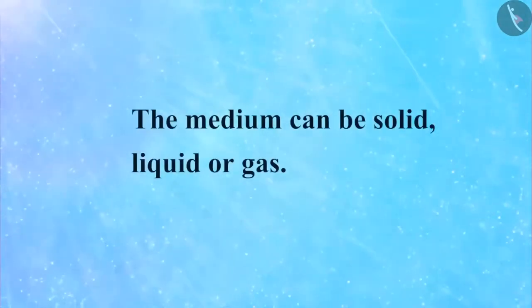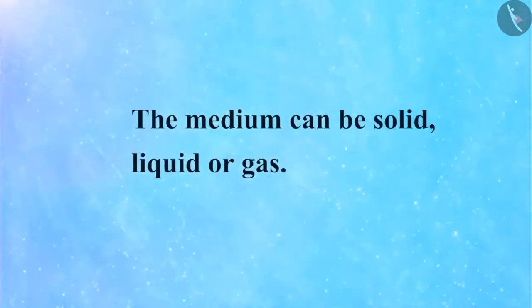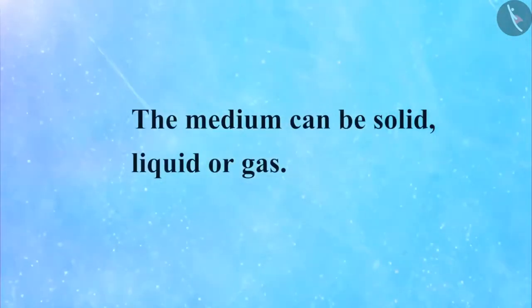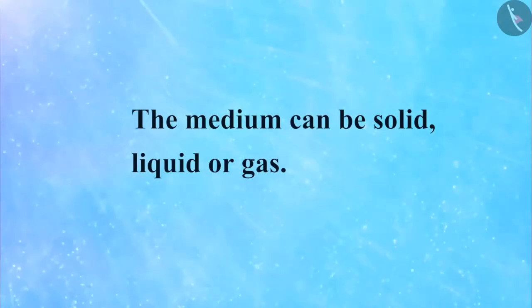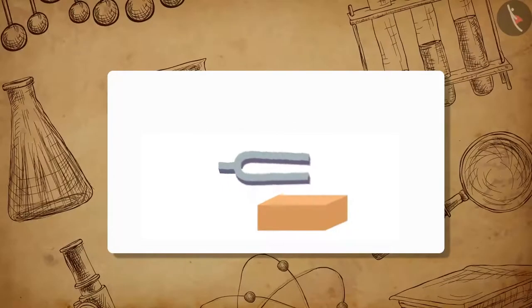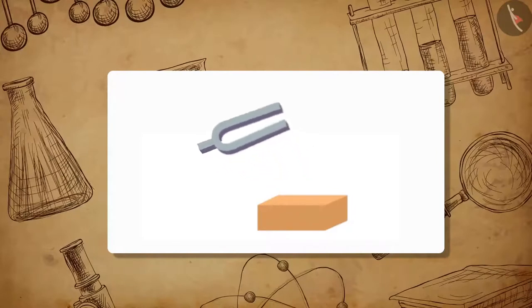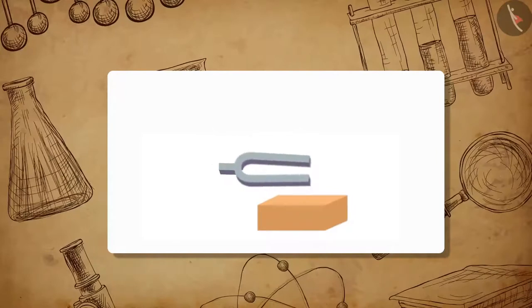The substance or matter through which sound propagates is termed as medium. The medium can be solid, liquid, or gas. As soon as an object is set into vibration, it starts the vibration of the particles around it.